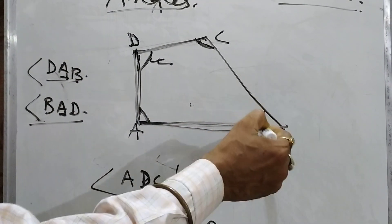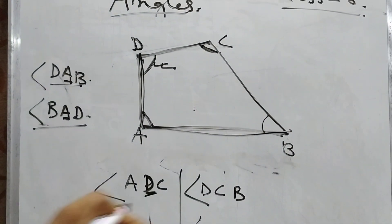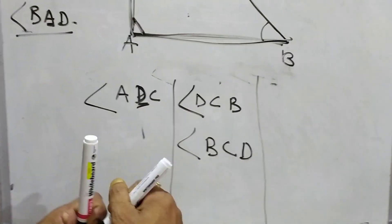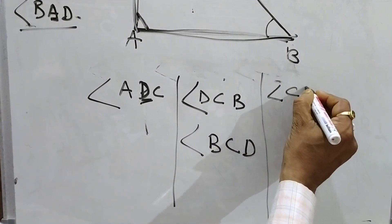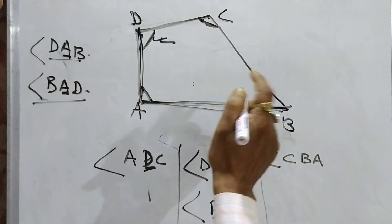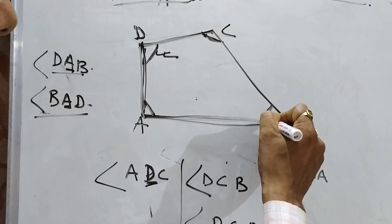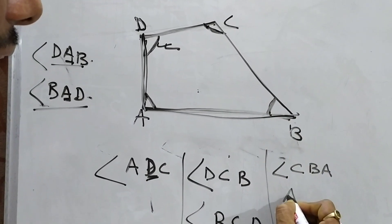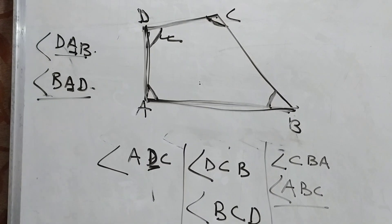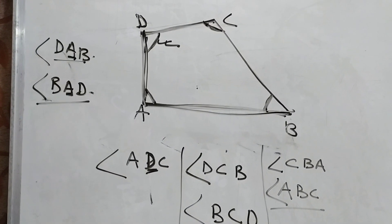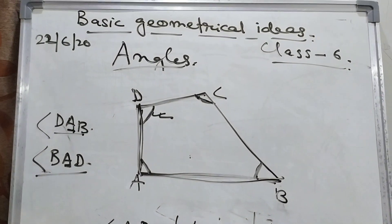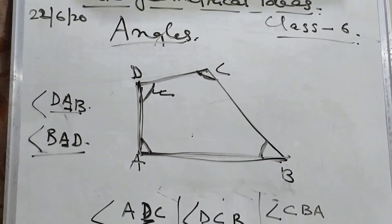Now, if I find this angle, I can write it as angle CBA — C, B, A. That means this is the representation of the angle. Or we can write ABC. This is the angle. So this is the way we represent the angle, students. Hope you have come to know how we can represent the angle.